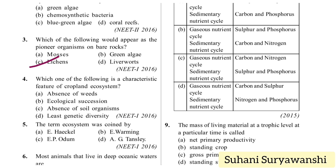Which one of the following is a characteristic feature of cropland ecosystem? Options: absence of weeds, ecological succession, absence of soil organism, and least genetic diversity. The correct answer will be least genetic diversity, option D.